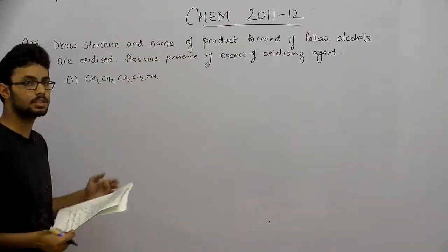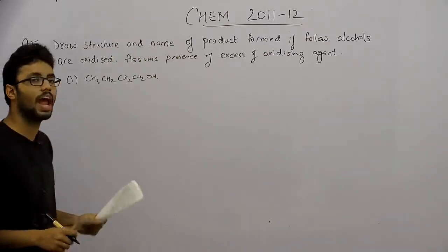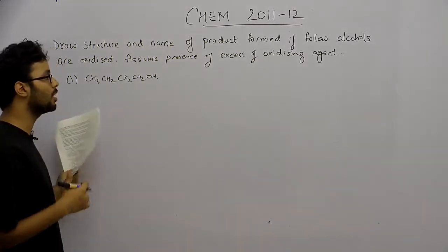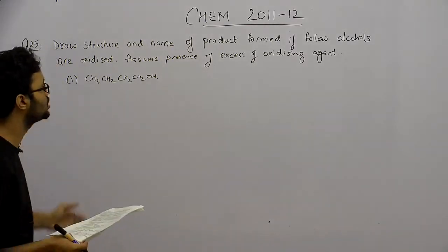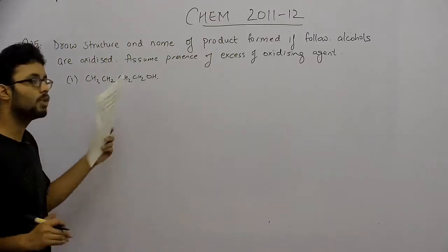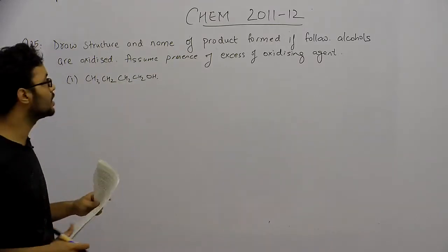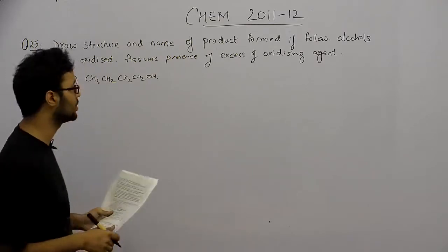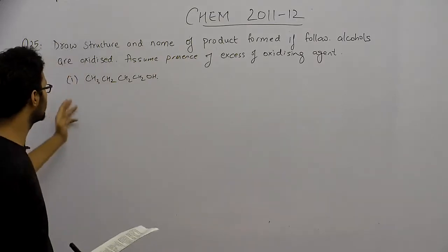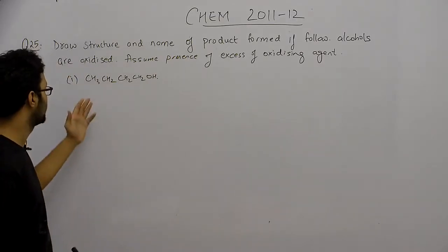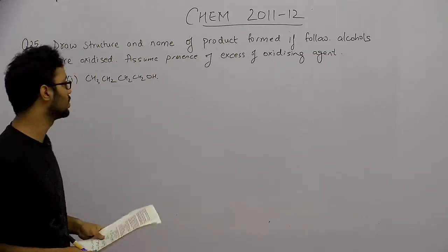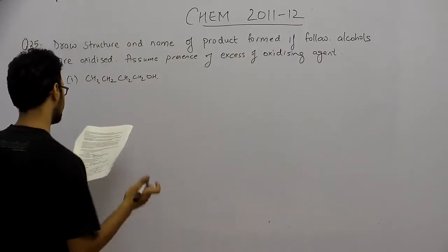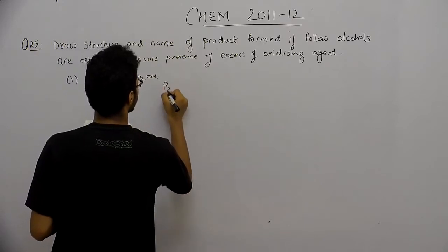The next question asks us to draw the structure and name the product formed when the following alcohols are oxidized, assuming oxidation occurs in excess oxidizing agent. The first alcohol is butanol. When it is oxidized, we get butanoic acid.